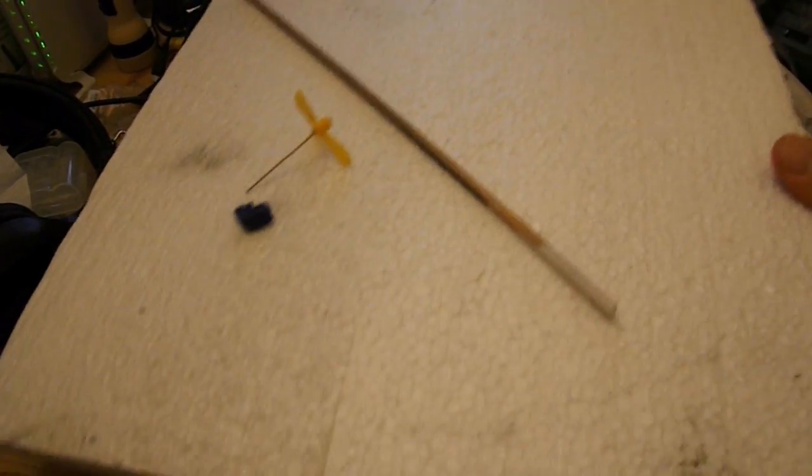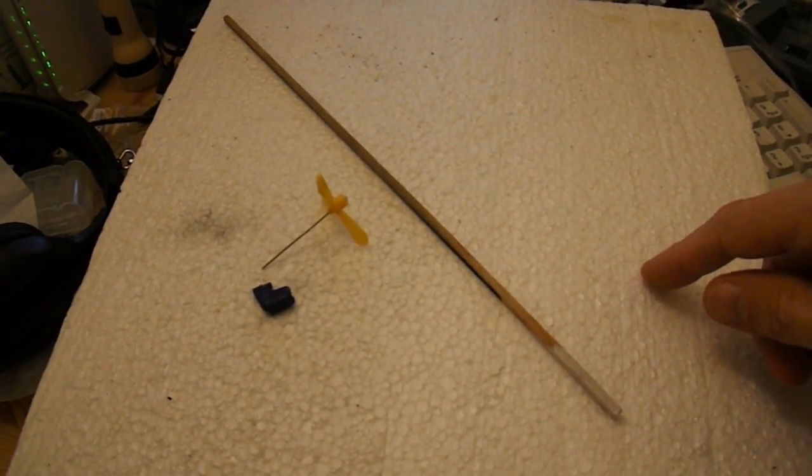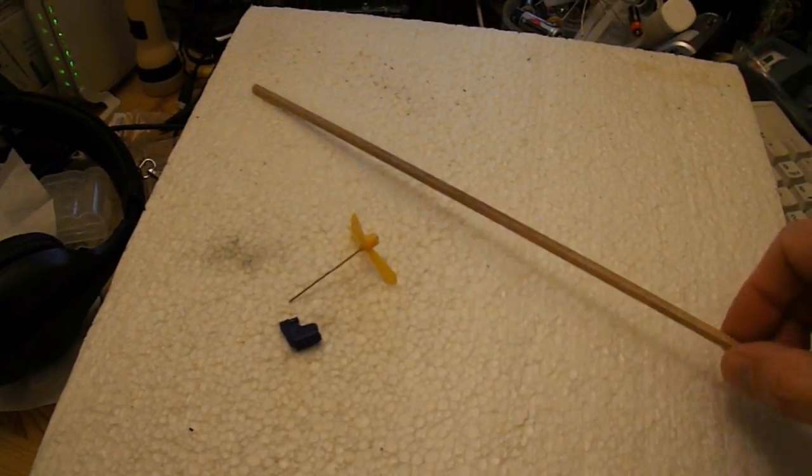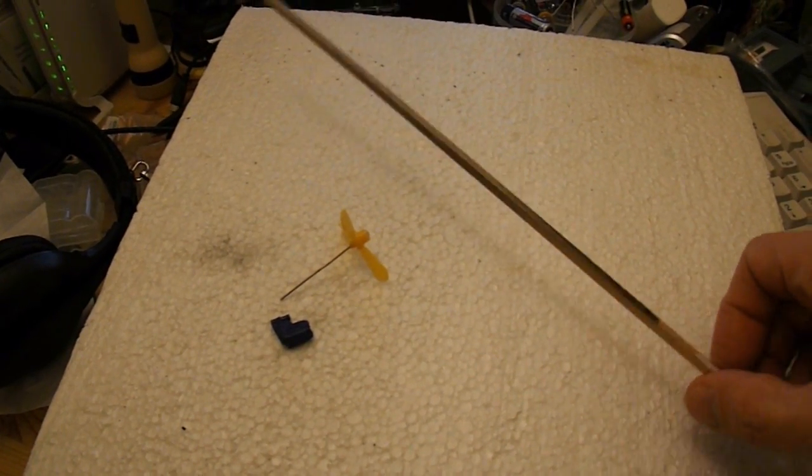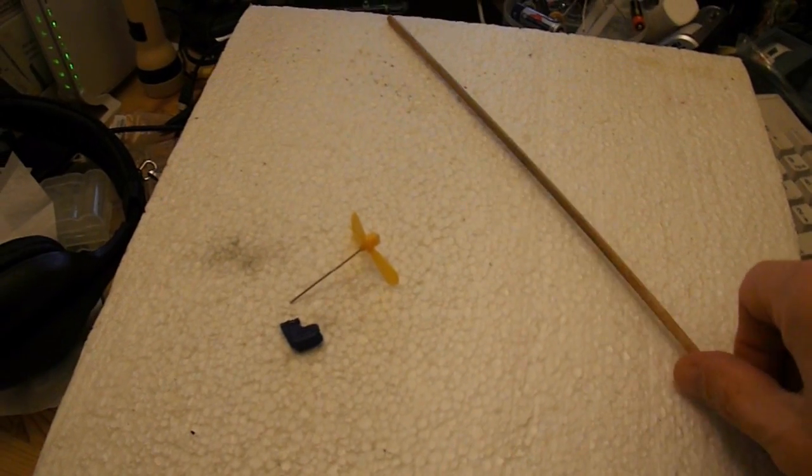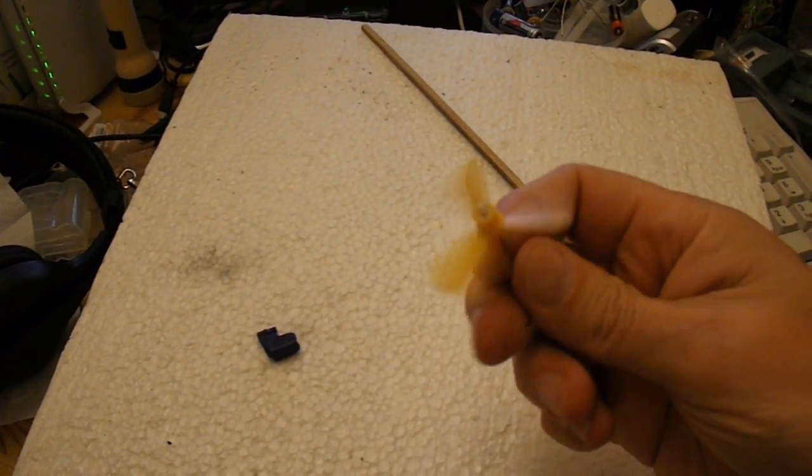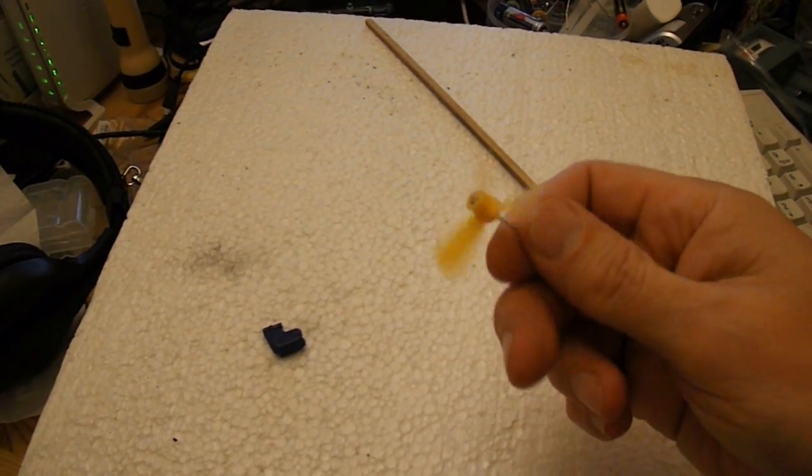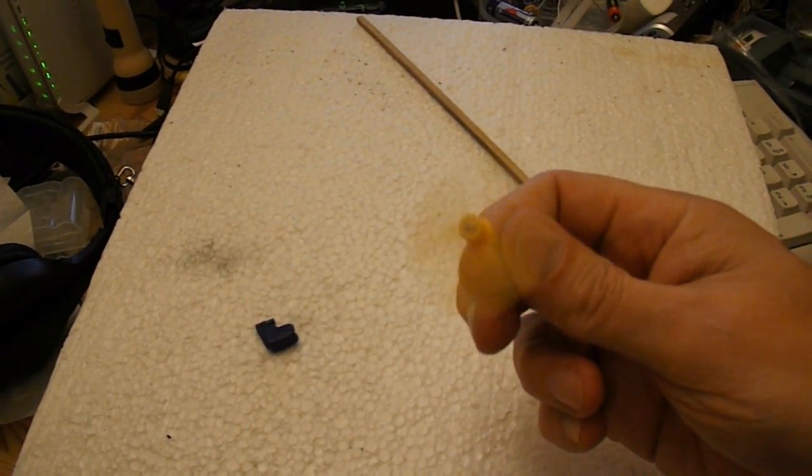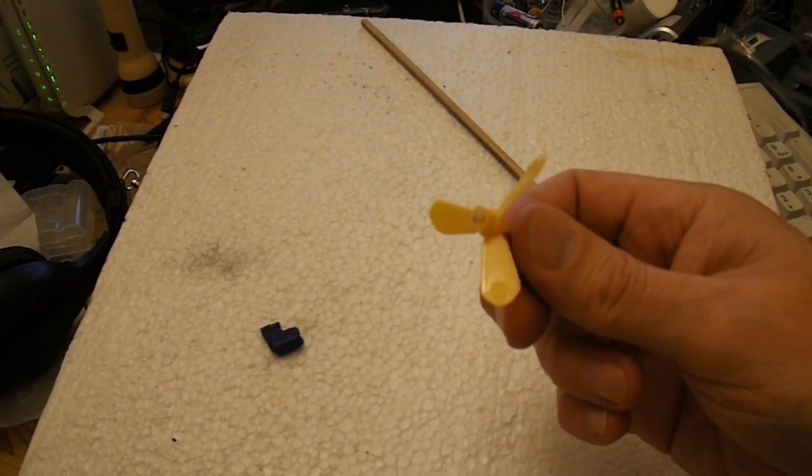I've got some scrap polystyrene packaging here. I've got a wooden stick that comes off of a firework rocket that we found in our garden. I've got a little propeller blade here that comes off a toy. It's the one I've used on some of my little aeroplanes actually.